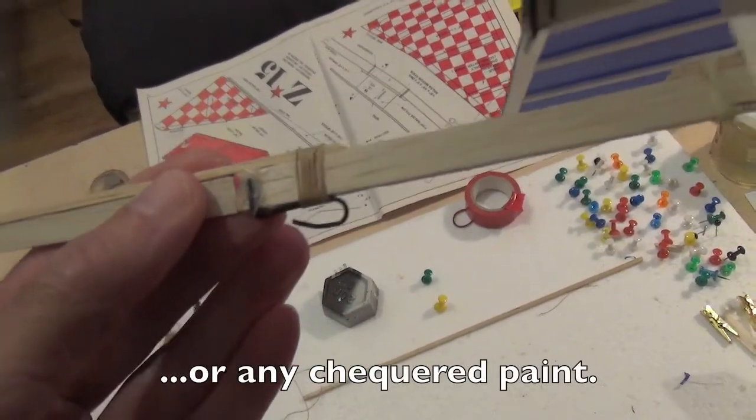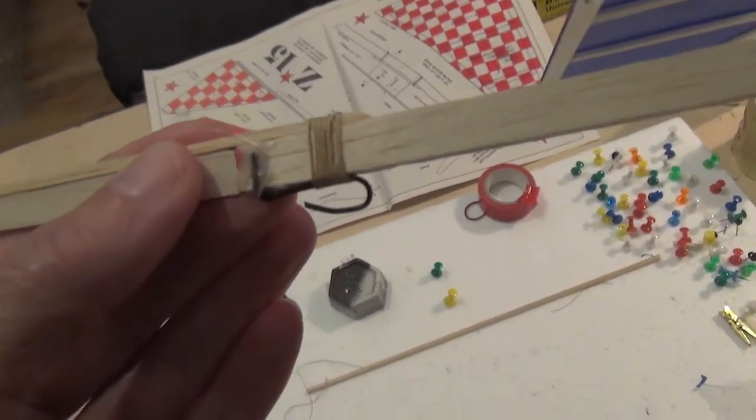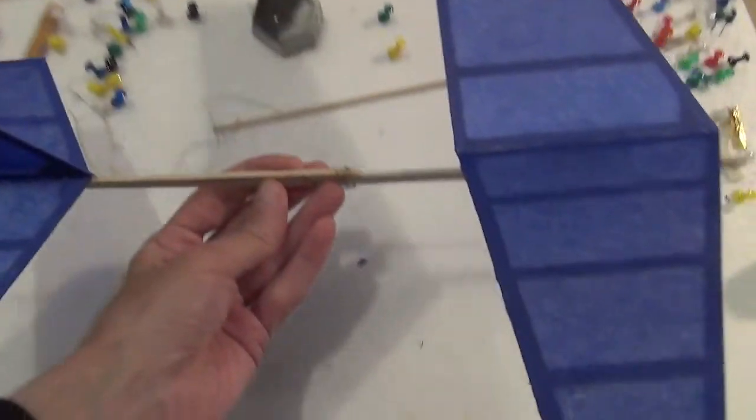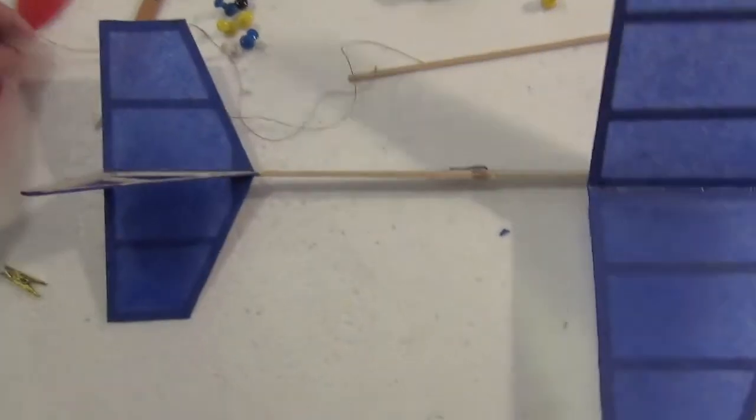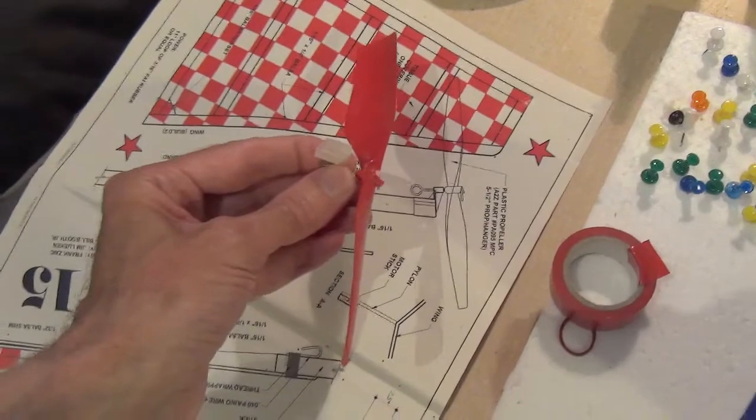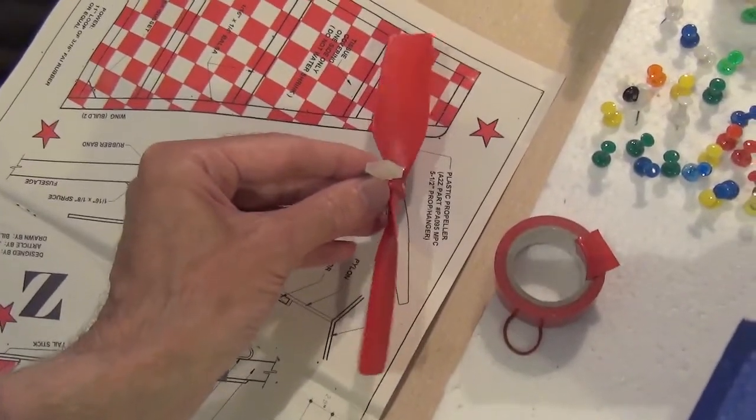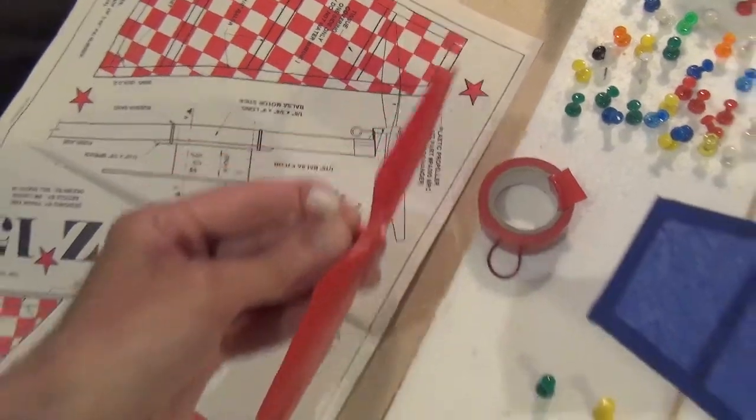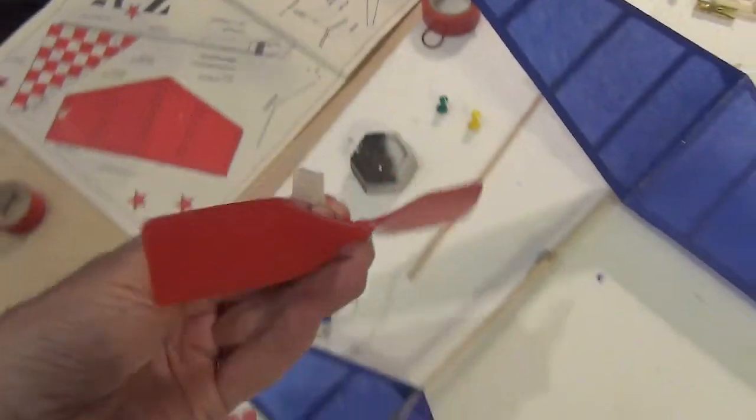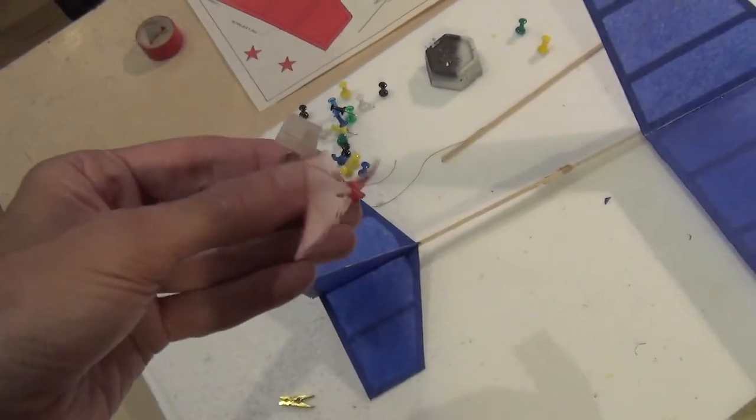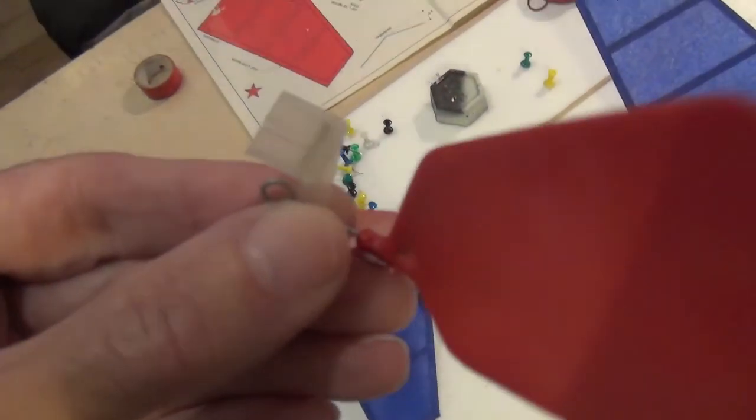Hook for the rubber, again from a paper clip. And I do happen to have this propeller which is similar to as shown on the instructions, but bigger. So I've got to see whether it's too big.